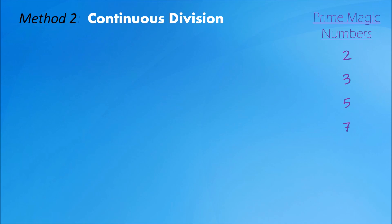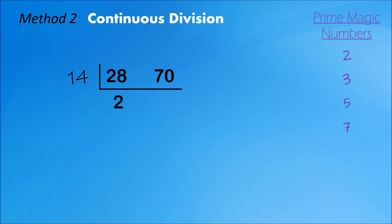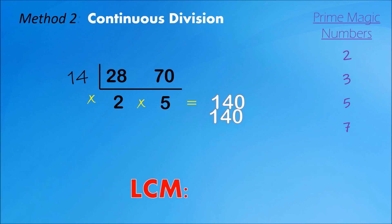Now, what if you don't want to use the prime magic numbers and divide 28 and 70 by 14 right away? That's okay, because you will still get the same answer. 28 divided by 14 is 2, and 70 divided by 14 is 5. Multiply all the numbers outside: 14 times 2 times 5 — you still get 140. Therefore, the LCM for 28 and 70 is 140.